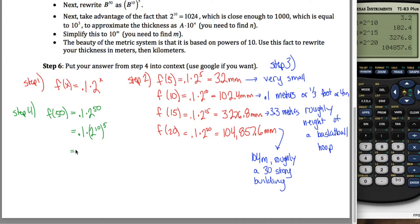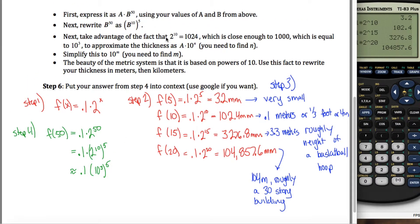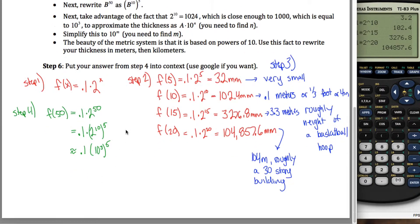And the reason you did that, maybe I shouldn't say equals, let's say approximately equal to 0.1 times 10 cubed to the 5th power. If you go through and read this, it says 2 to the 10th power is almost 10 to the 3rd power, so call it good enough so that you can do your calculations easier. But wait a minute, 10 to the 3rd to the 5th, that would just be 10 to the 15th, right?